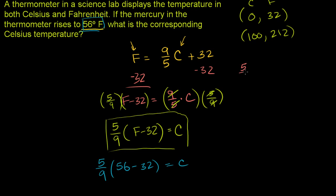So it's going to be 5 ninths times 24. That right there is 24. 5 ninths times 24 is going to be equal to C. And let's see if we can simplify this. So this is the same thing as 5 times 24 over 9. 24 is divisible by 3. You divide it by 3, you get 8. 9 divided by 3 is 3. So 5 times 8 is equal to 40 over 3 Celsius, degrees Celsius.